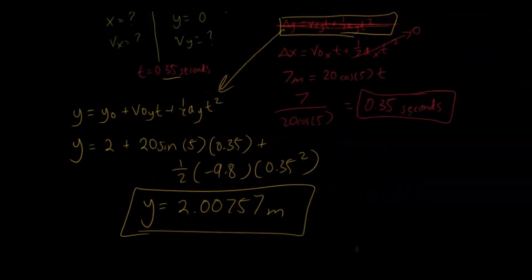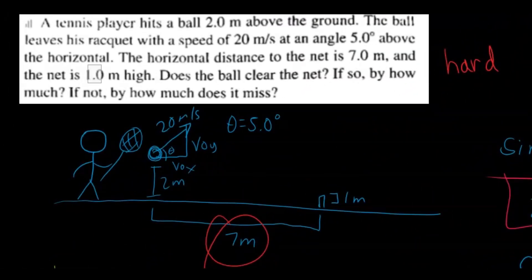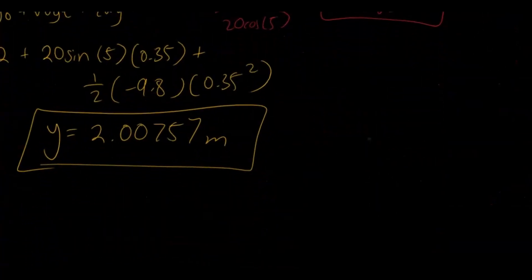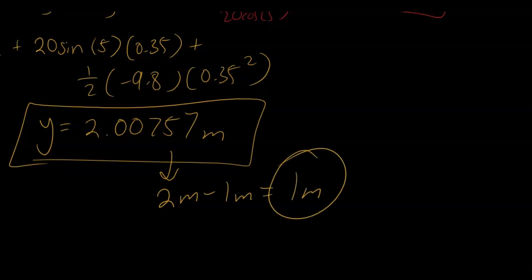All right. So this is the final height or the final y position of the ball at 0.35 seconds when it is right in line with the net. And the net, it said, was 1 meter high. So it said it was 1 meter high. And so it does clear the net pretty easily, actually. And we can just do around 2, let's just call this 2 meters, minus 1 meter. It clears it by a grand total of 1 meter. So yeah, that does it for this video.